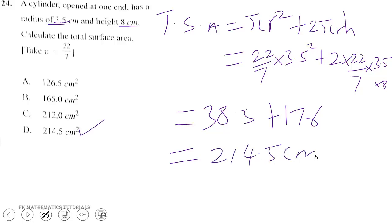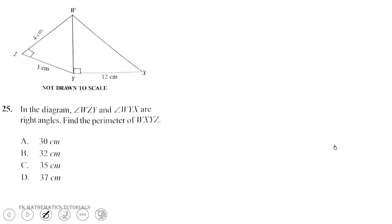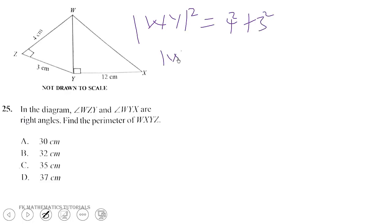In the diagram, angle WZY and angle WYX are right angles. Find the perimeter of WXYZ. Since WZY is a right angle triangle, WY is the hypotenuse. WY squared equals 4 squared plus 3 squared, so WY equals the square root of 25, which is 5.